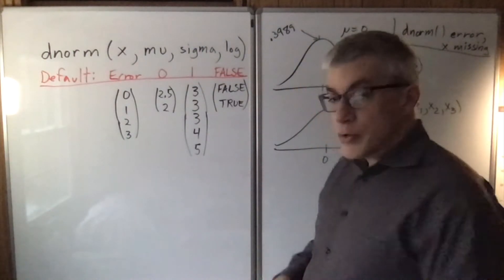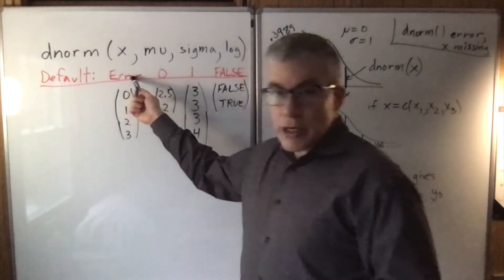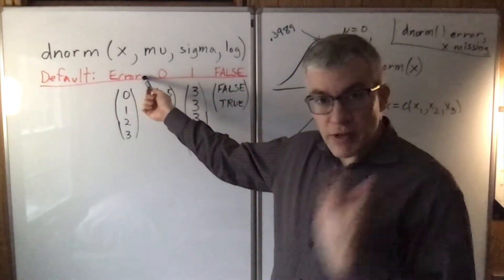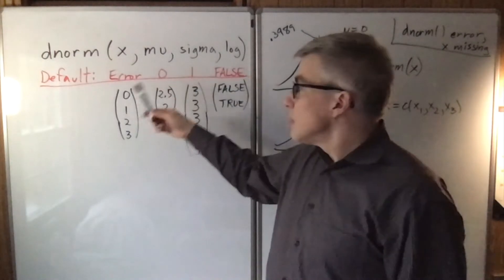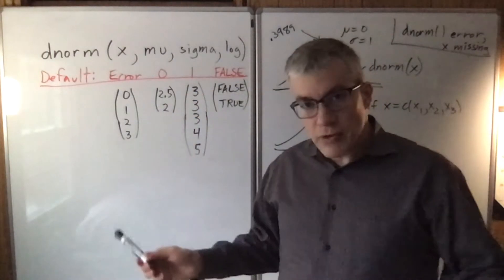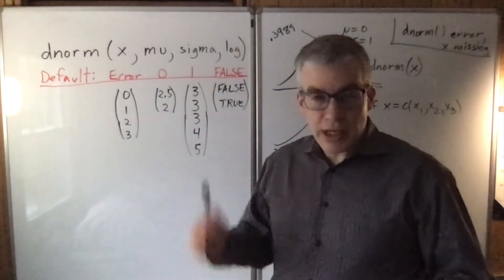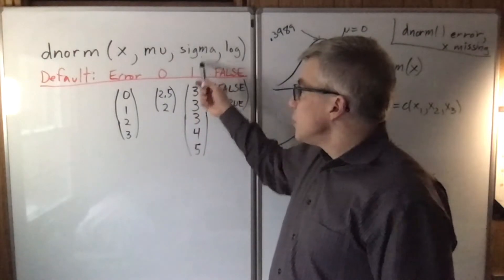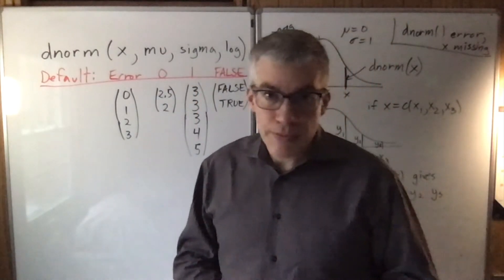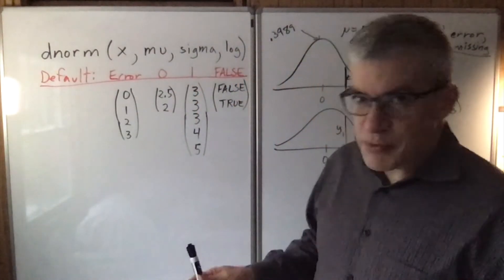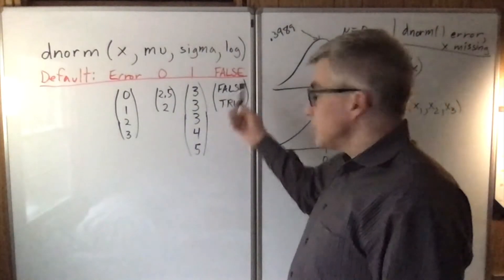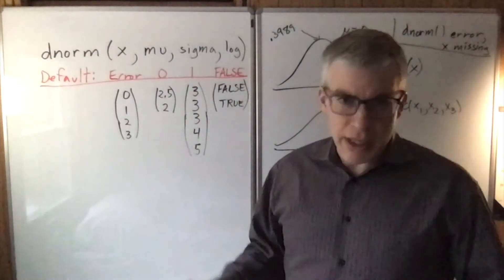For defaults: you're going to get an error if you don't include the first argument — if you don't give it anything to find the height of. For the second thing, if you don't give it a mu at all, it's going to give zeros. If you don't give it a sigma, it's going to give one. And if you don't tell it you're going to do logarithms, it's going to assume you don't want any.